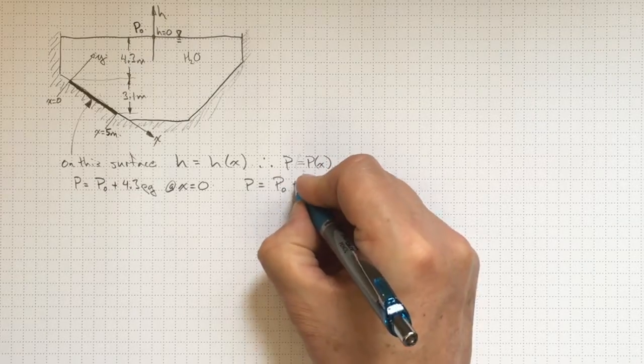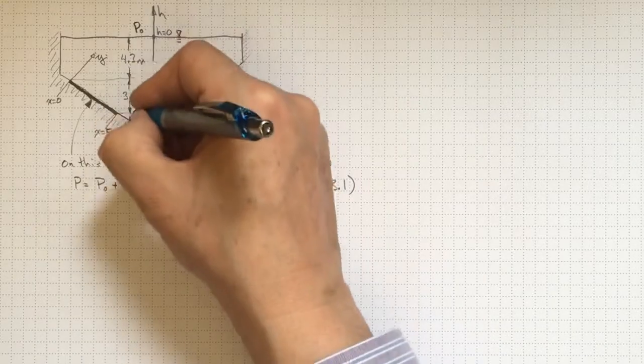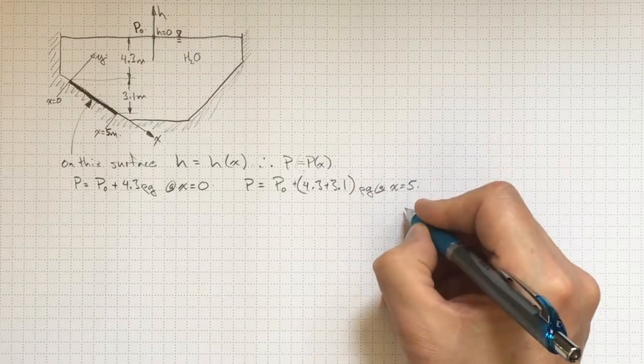And p is equal to p-naught plus 4.3 plus 3.1, the total elevation change down to there, times rho g at x equal to five.